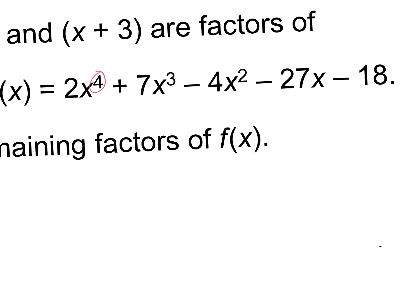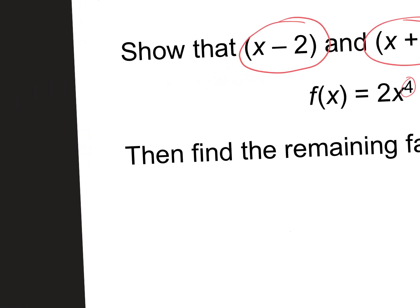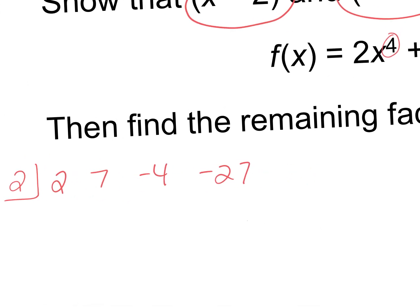This first example is just showing you how this works, and then we're going to talk about something called P over Q. In this case, they're telling you to prove that x minus 2 is a factor and x plus 3 is a factor. The way we would do that is use synthetic division, and your remainder would be zero if it's a factor. So the first thing I'm going to do is use x minus 2. Setting it equal to zero, I put 2 in the corner.